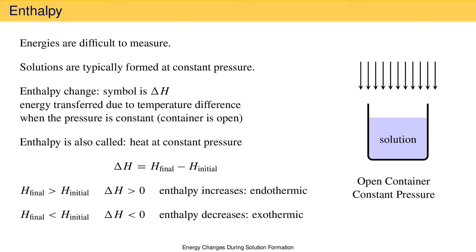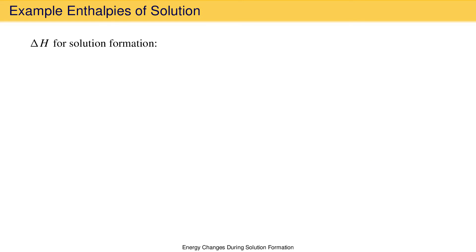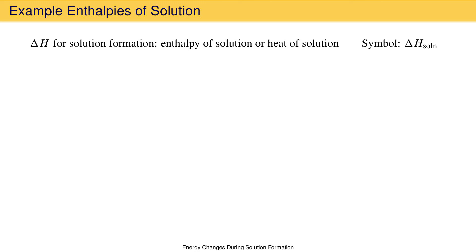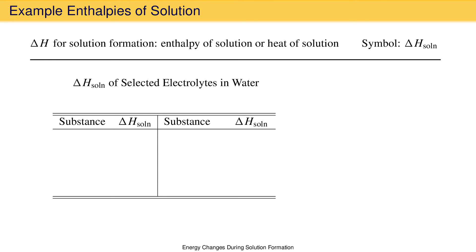That's all important, but we have not seen any actual values for the enthalpy change upon solution formation. The enthalpy change for solution formation is called the enthalpy of solution or heat of solution — both terms mean the same thing. The special symbol is delta H with a subscript S-O-L-N. When you see this, you know it refers to the enthalpy change when a solute is mixed with a solvent to form a solution: the enthalpy of the solution minus the enthalpy of the unmixed solute and solvent.